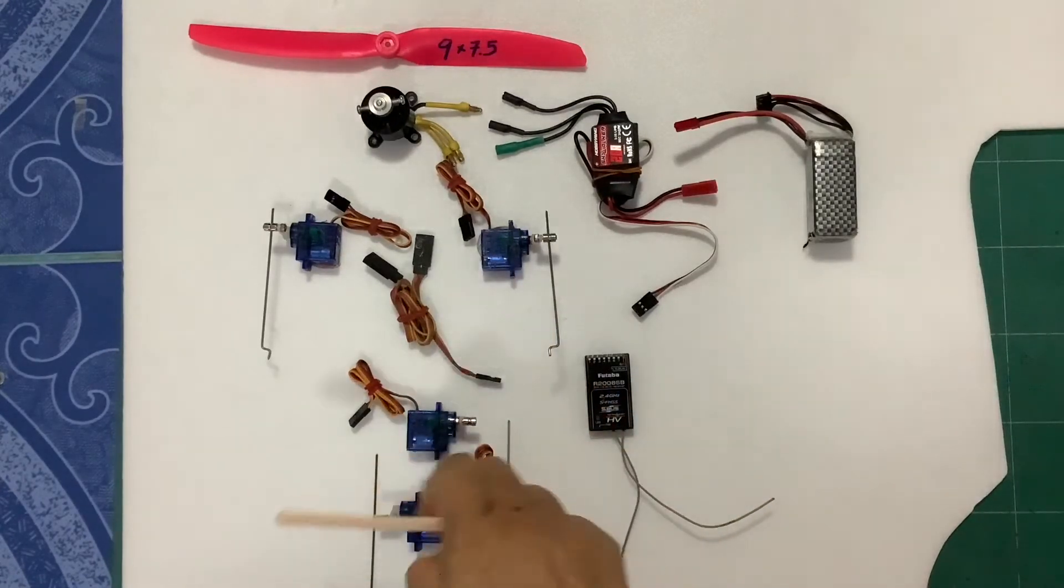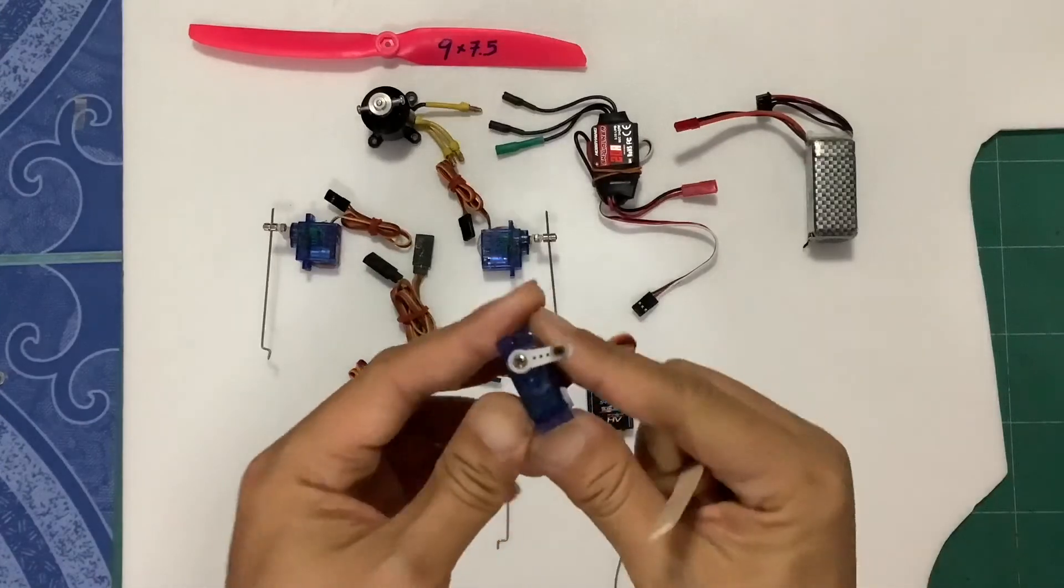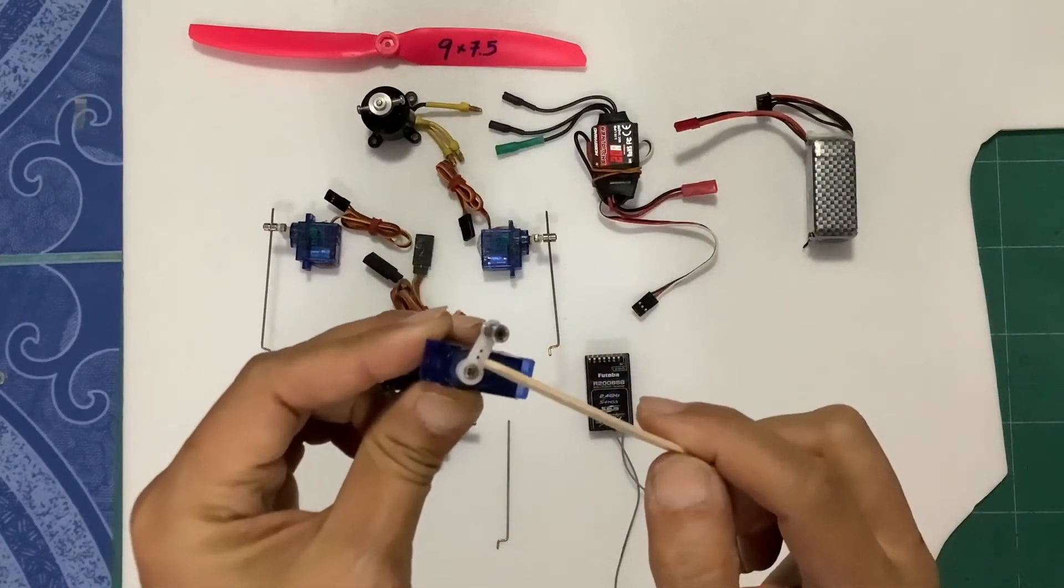This servo will control the rudder. All servo will have arm. This is arm. The plastic. The white plastic. We call arm.